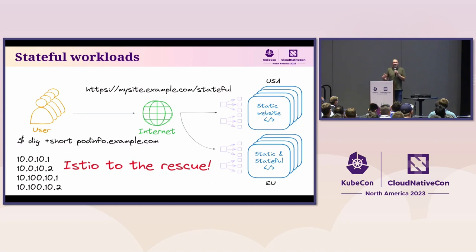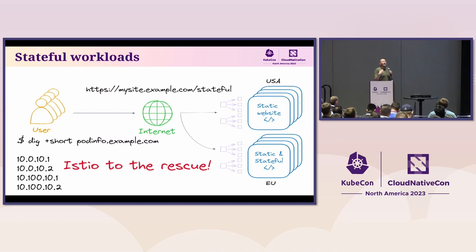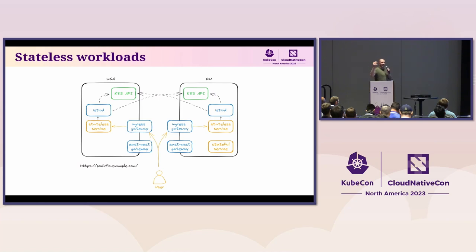We can introduce Istio. Don't be too scared of it — the learning curve and deployment troubleshooting can be a bit painful, but the capabilities it gives you are pretty amazing. It doesn't have to be Istio — any service mesh will do. Istio is the control plane for Envoy sidecars — the data plane — with Envoy sidecars in every injected pod. We're going with the sidecar model rather than ambient mesh.